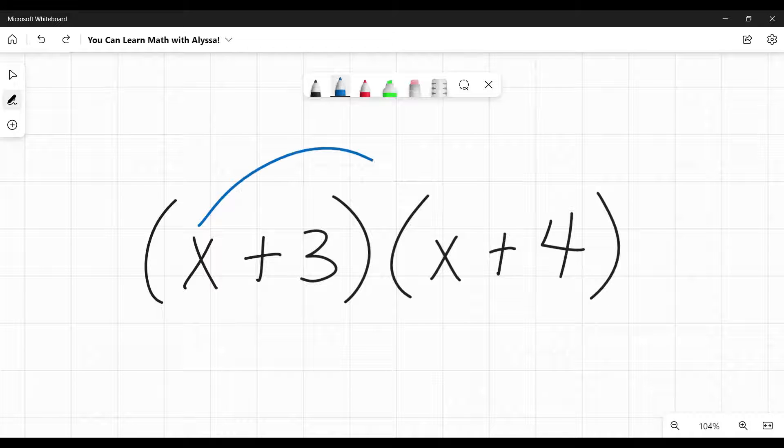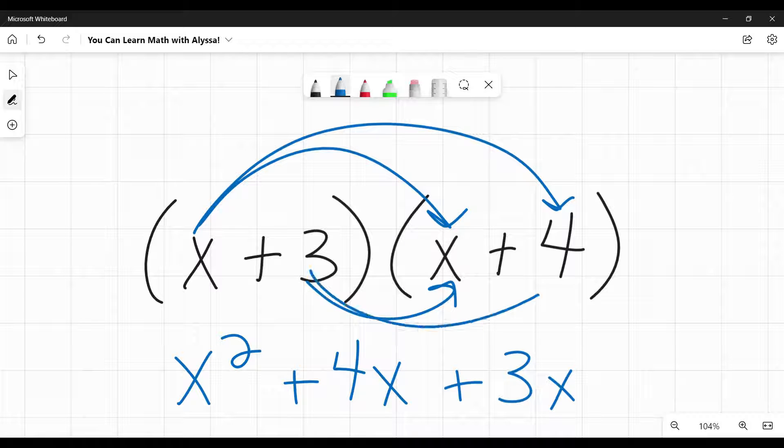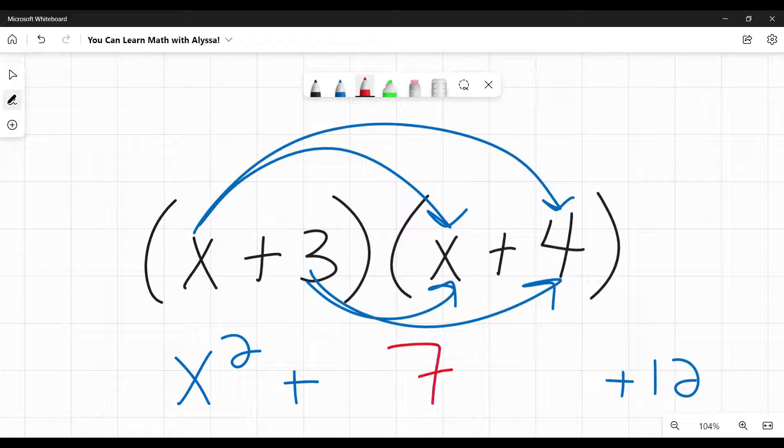In this case, x times x would be x squared, then x times 4, positive 4, this is positive 4x. 3 times x is a positive 3x. 3 times 4 is 12. These two in the middle are like terms, so we could combine them and they would come out as 7x, and that would be my final answer.